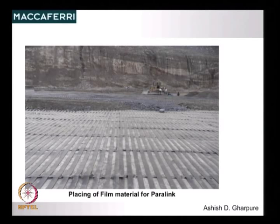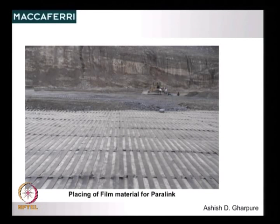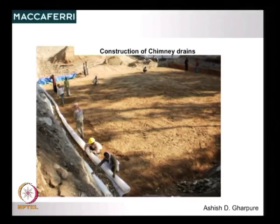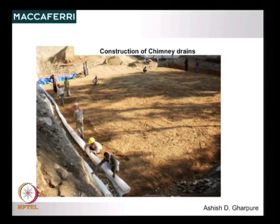This is a close-up of the paralink geogrid. We can debate whether having stones in the fill is good practice, but this was a necessity — they could not have crushed all of the stones. The instruction given was that stones should not be placed directly on the paralink; there should be 6 inches of fill done first so as not to affect the performance of the paralink. Again the chimney drain construction is visible.